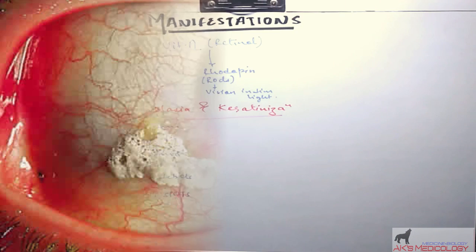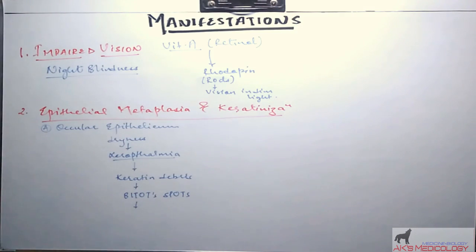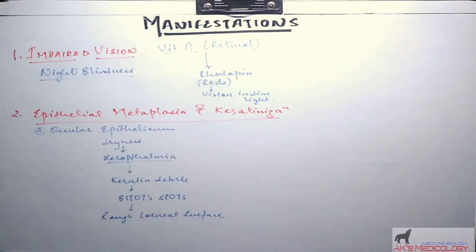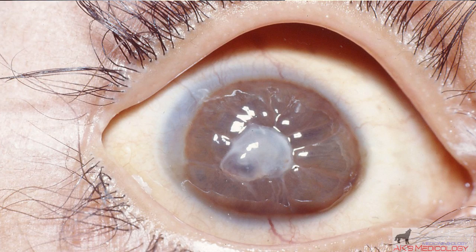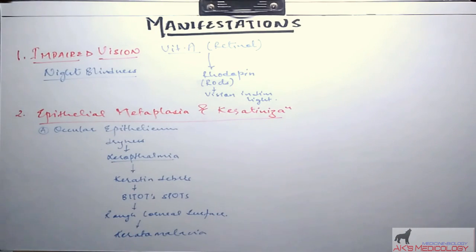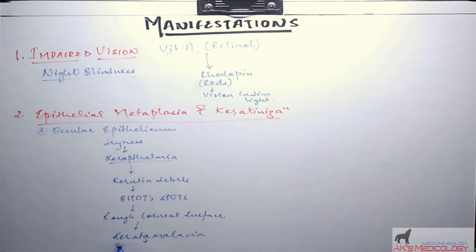These keratin debris and Bitot's spots result in roughening of the corneal surface which ultimately results in erosion of the cornea and is called keratomalacia. If this progresses or is not treated by supplementation of vitamin A, this might lead to permanent blindness.